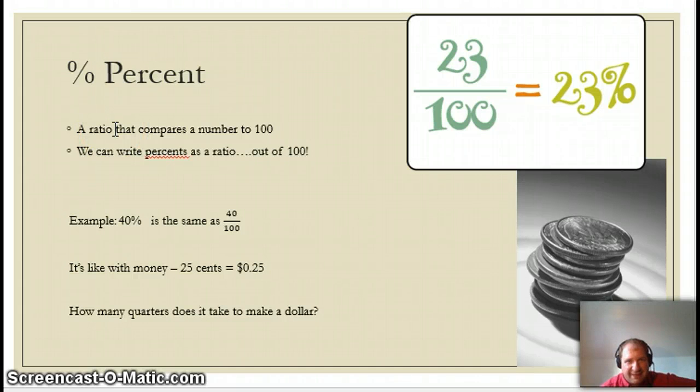So a percent is a ratio that compares the number to 100. We always tend to write them as a ratio: how many of one part, how many parts out of 100? 40% the same as 40 over 100. With money, 25 cents, 0.25. That's how much of a dollar you have. Four quarters to the dollar. We could actually make that one-fourth if we wanted to.